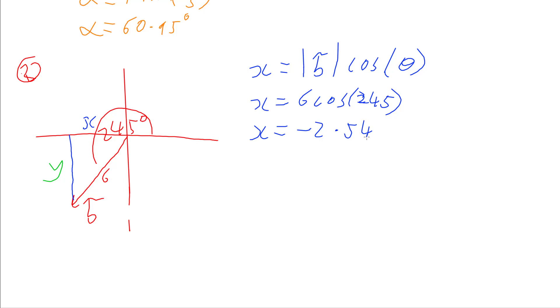And then doing the same for the y. Y is the magnitude of B, sine the angle. And y is going to be 6 sin 245, which gives us a y of negative 5.44.